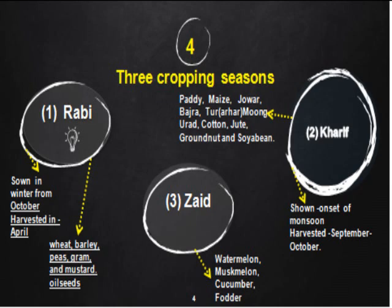The next season is Zaid. Zaid crops are sown between the Rabi and Kharif seasons, and the main crops of this season are watermelon, muskmelon, cucumber, and fodder.